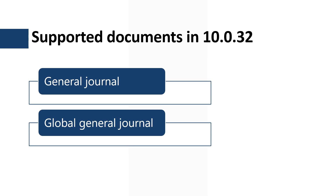The Financial Tags feature supports only specific document types. In version 10.0.32, you can utilize this feature with the General Journal and the Global General Journal. However, from the Featured Documentation, I can see the product team mention that new documents will be supported in the upcoming versions.